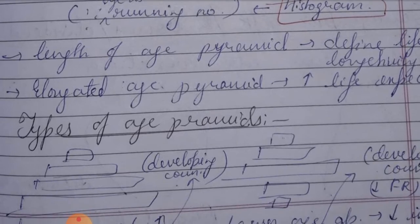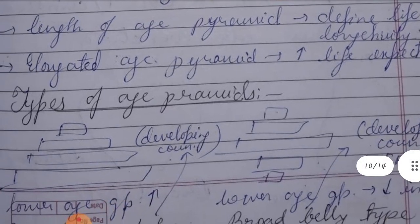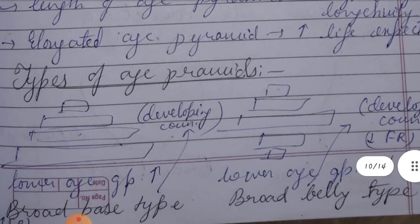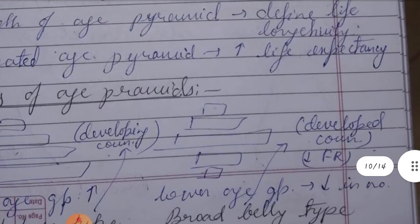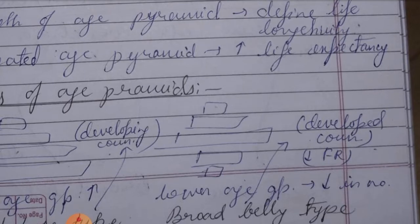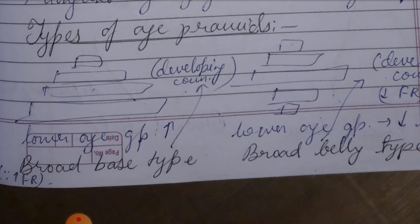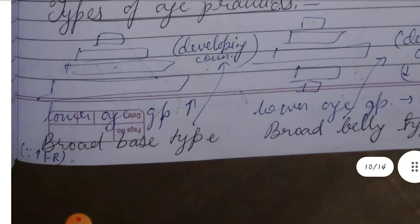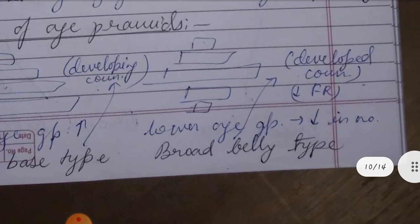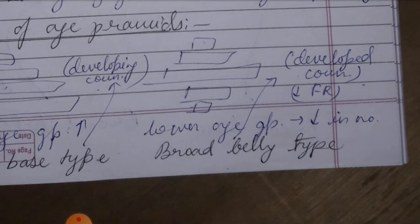The length of the age pyramid defines life longevity — an elongated age pyramid indicates high life expectancy. There are different types: a broad base type is seen in developing countries with high fertility rates and large lower age groups, while the broad belly type is seen in developed countries with low fertility rates and fewer younger people.